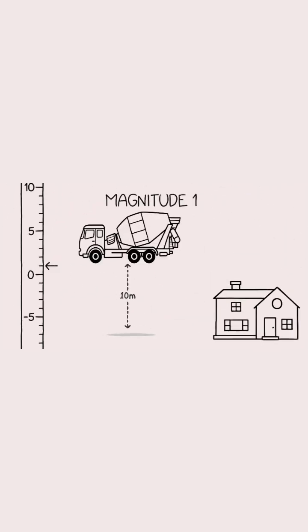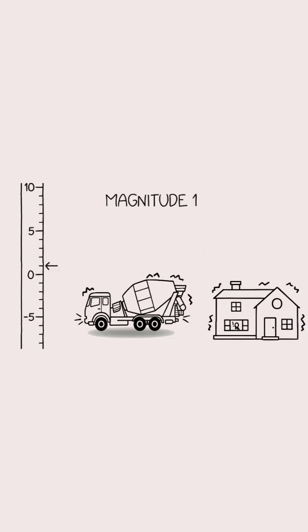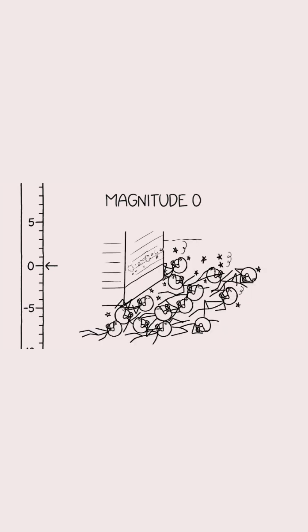A magnitude one quake releases the same energy as dropping a partially loaded cement truck from 10 meters onto the street in front of your house. A magnitude zero earthquake is equivalent to the Dallas Cowboys American football team running at full tilt into the side of your neighbor's garage.